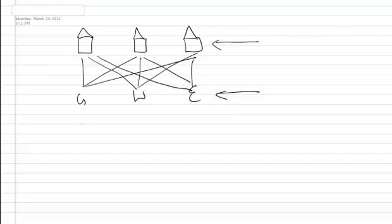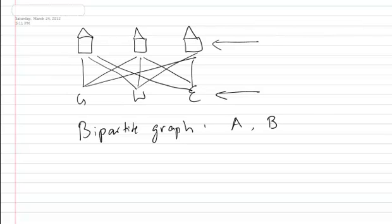Such a graph is called a bipartite graph. A bipartite graph usually has, instead of one vertex set, two sets of vertices, A and B. Each edge goes between one vertex in A and one vertex in B. In set notation, the edge set is a subset of A cross B — so you can't have an edge within A cross A, and you can't have an edge within B cross B. In a bipartite graph there are two sides, and within each side there are no edges. All the edges go across the sides.